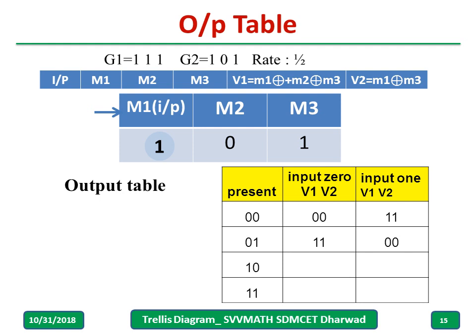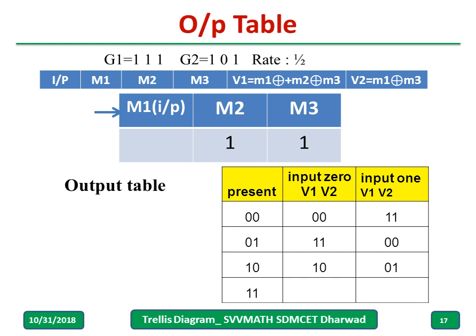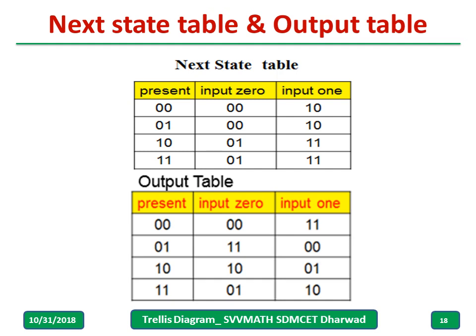Remember that mod-2 addition means 1 plus 1 always equals 0. You can pause and try the remaining entries. The outputs work out as: present state 10 with input 0 gives output 10, with input 1 gives output 01; present state 11 with input 0 gives output 01, with input 1 gives output 10. This completes the next state table and output table.